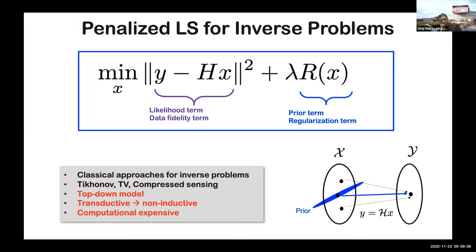However, there are several downsides to these approaches. If we solve this problem for a particular measurement, that knowledge cannot be transferred to another problem — so this is not an inductive approach. Another downside is that it is computationally very expensive, as you need to solve this optimization problem for every measurement.